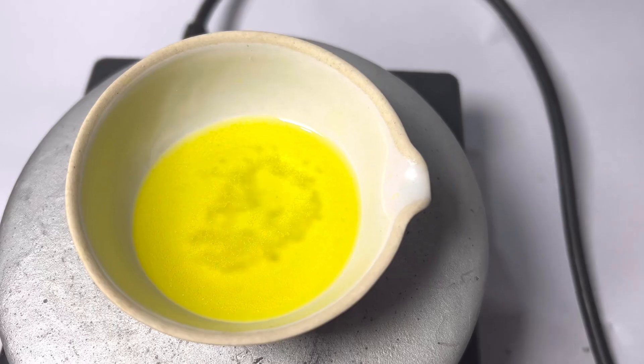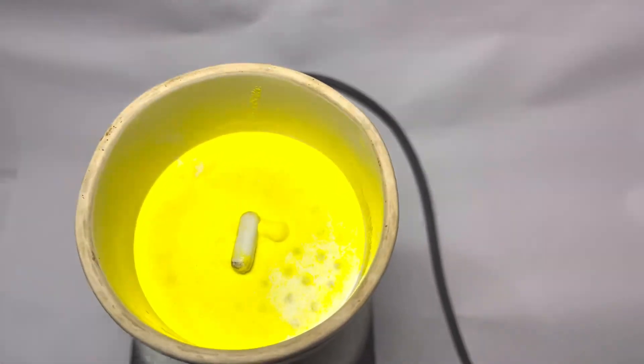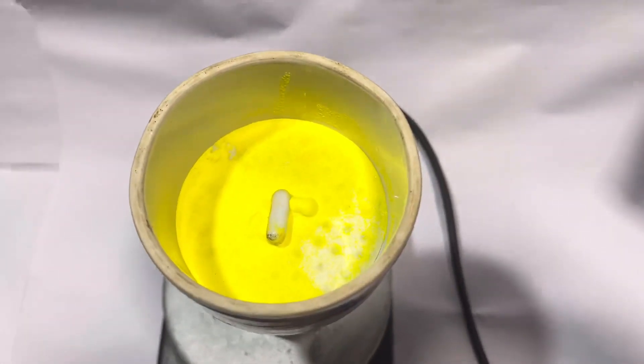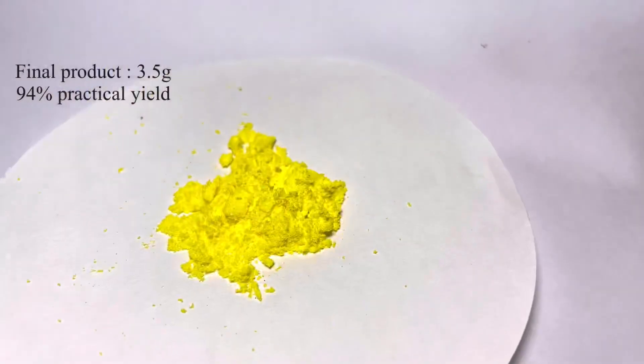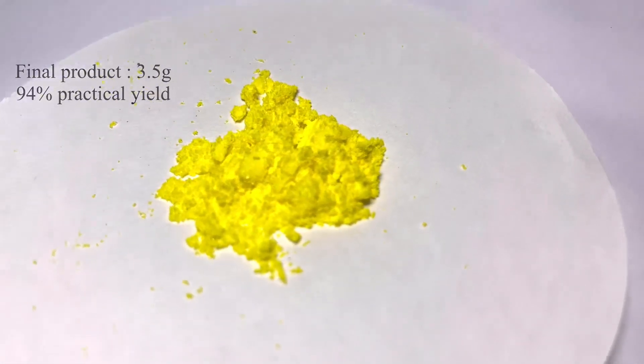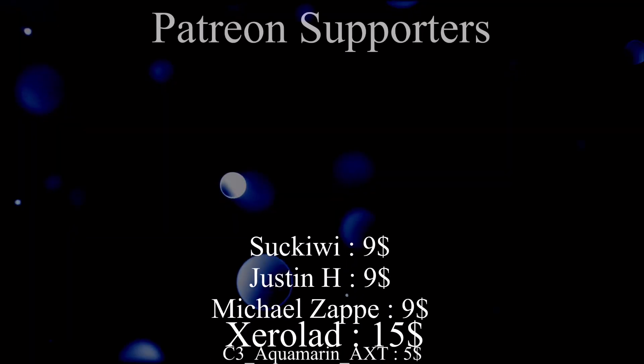Later the microcrystalline yellow precipitate was vacuum filtered and dried. I got around 3.5 grams of the compound, which is around 94% yield. That's all in this video, hope you have enjoyed it.